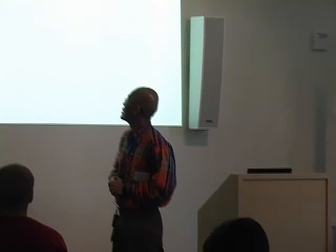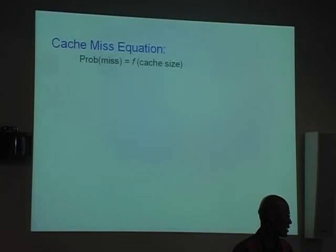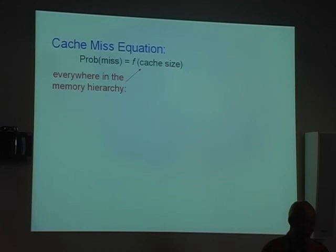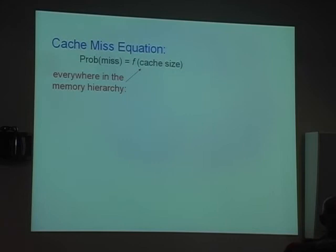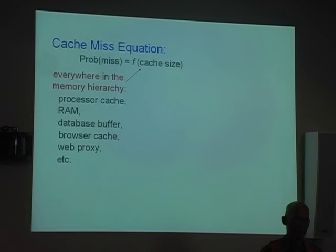The cache miss equation expresses the probability of a cache miss as a function of the cache size. One of the ambitious things about this program is that I'm not attacking any particular one level of the memory hierarchy — I'm saying this is the way to attack any level of the hierarchy. Cache here is very general: it could refer to the processor cache, the RAM, a database buffer, a web proxy, et cetera.